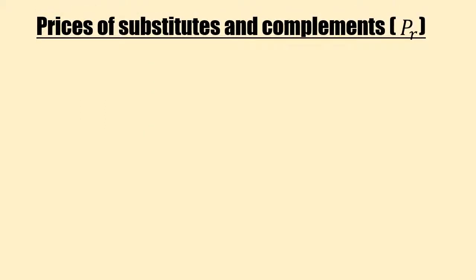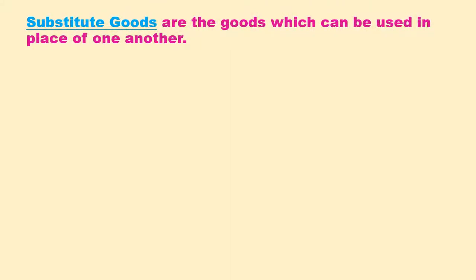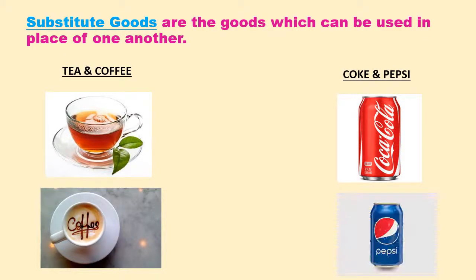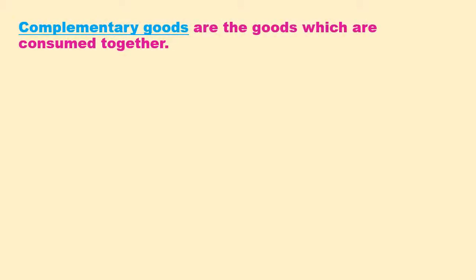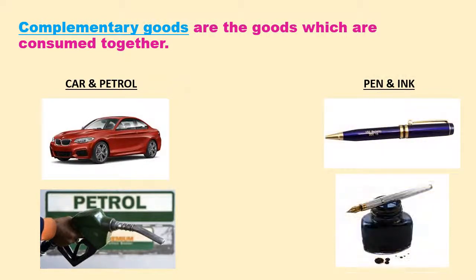The next important determinant is price of substitutes and complements, denoted by PR. Substitute goods are goods which can be used in place of one another — for example, tea and coffee, or Coke and Pepsi. Complementary goods are goods which are consumed together — for example, car and petrol, or pen and ink. These cannot be used independently of each other.